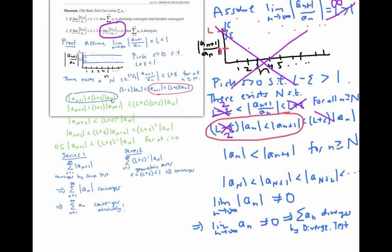I'll just write a two there. And now, as before, we can conclude that the absolute value of a sub (n plus one) is strictly greater than the absolute value of a sub n — in fact, greater than twice of it — for all little n greater than or equal to capital N. We can make the same conclusion: the terms form an increasing sequence of positive numbers, so the terms can't go to zero and the series has to diverge by the divergence test. This concludes the proof of the ratio test.